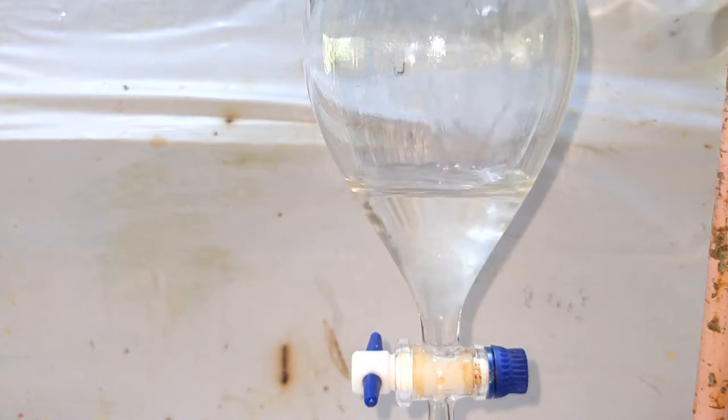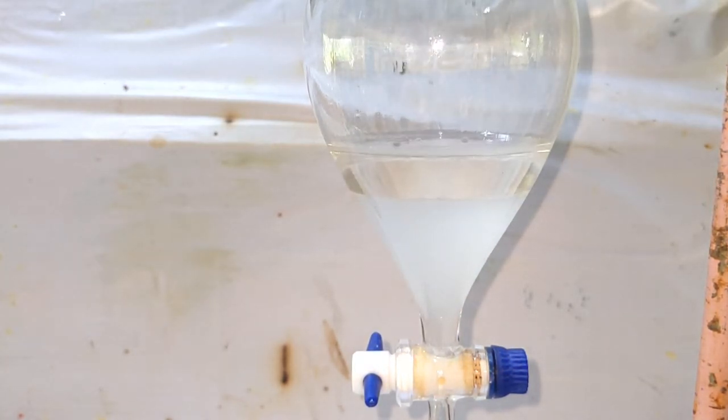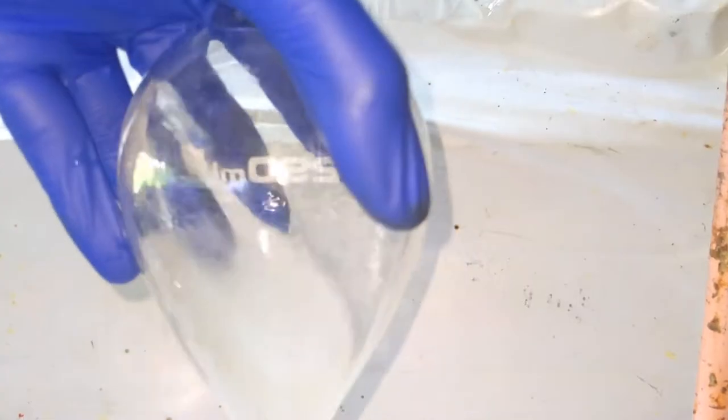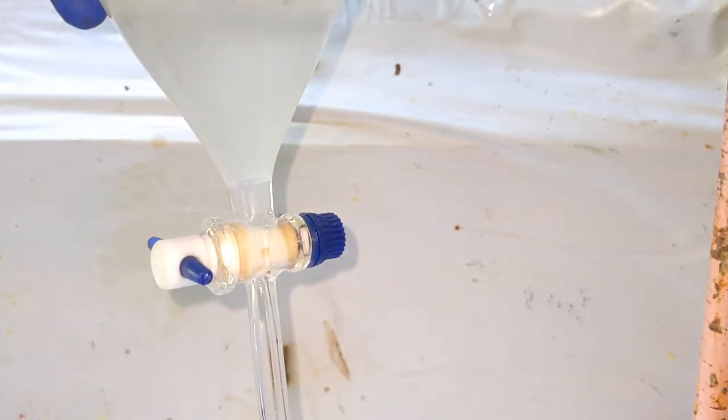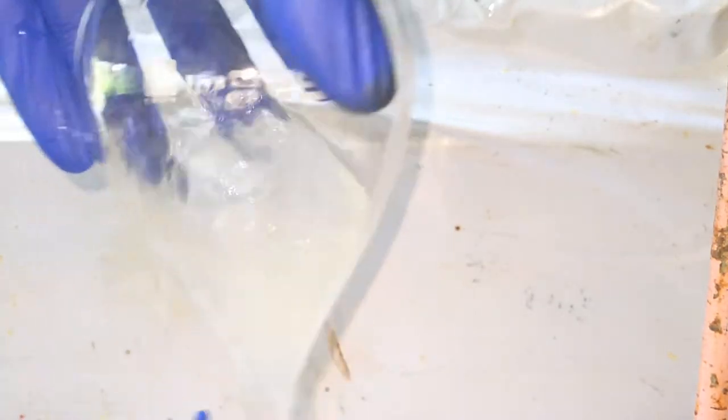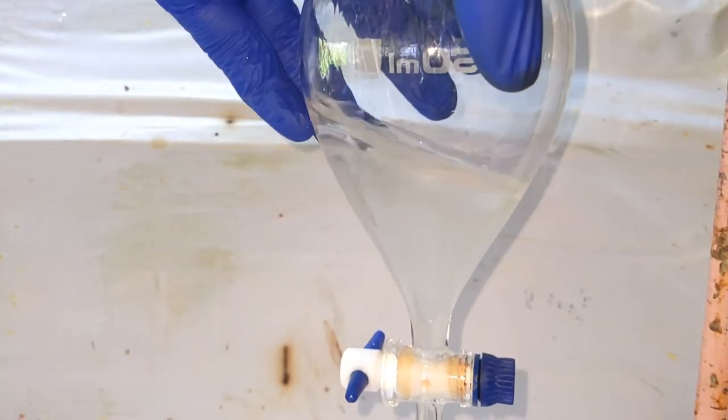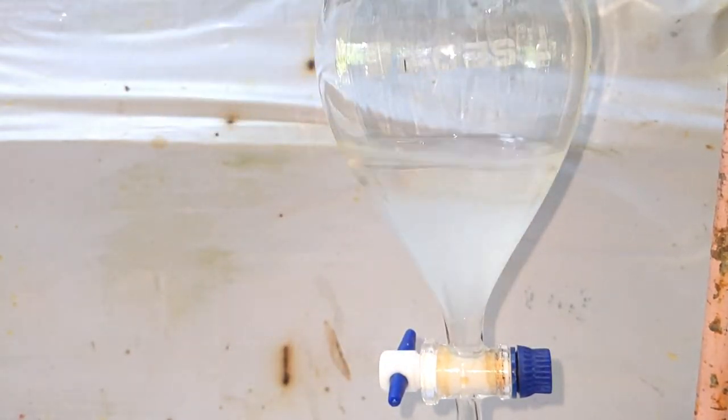A second washing was done with concentrated sodium bicarbonate solution, and this would ensure that the remaining acid would get neutralized. After adding the sodium bicarbonate, the separatory funnel was shaken vigorously to make sure that the organic layer completely mixes with the sodium bicarbonate solution.